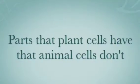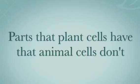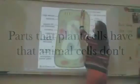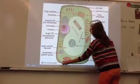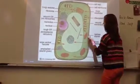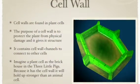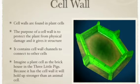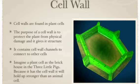Some parts that plant cells have that animal cells don't. This right here, all around, is where the cell wall is. Cell walls are found in plant cells. The purpose of a cell wall is to protect the plant from physical damage and it gives it structure. It contains cell wall channels to connect to other cells.